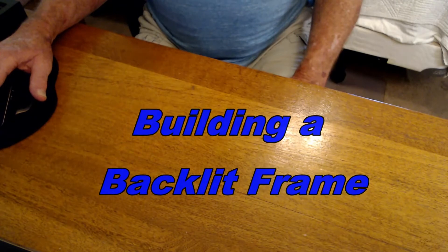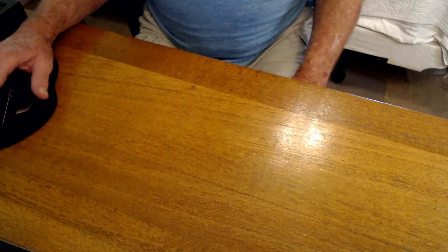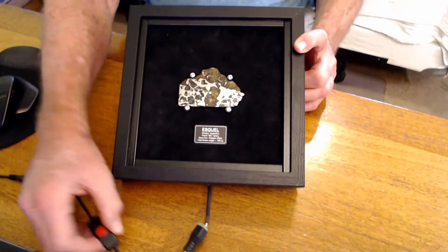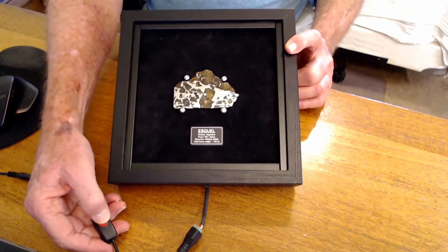So I've been building a series of backlit frames for some meteorite slices. I've been thinking about new types of frames. Now normally I build a frame that looks like this. This is the latest slice, which I've displayed already.